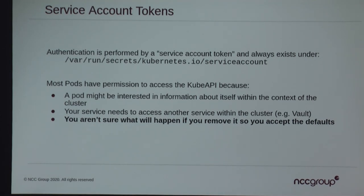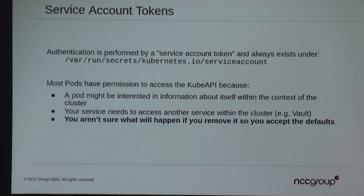The first thing we need to understand is service tokens — JWTs stored in the same path every single time: /var/run/secrets/kubernetes.io/serviceaccount/token. That JWT is able to authenticate to the Kubernetes API. Why would anybody put an authentication token in every single pod to allow access to the Kubernetes API? One reason: pods need to understand how they're running in the context of the cluster and need to ask the cluster questions. A more common reason is services like HashiCorp Vault that use an authentication token to authenticate back to the Vault service.